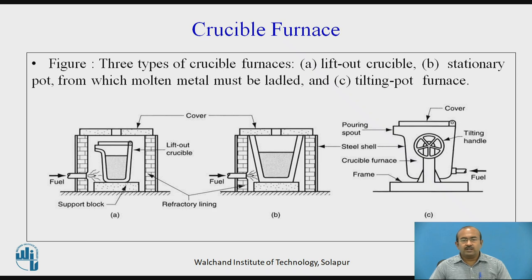The second type is a larger, stronger structure with more capacity — the stationary pot — in which the molten metal cannot be lifted out directly, but can be taken out by means of ladles. For simplicity of pouring, the tilting pot furnace was developed. Subfigure C shows how the tilting mechanism works with a tilting handle. The ladles can be filled by tilting the crucible furnace itself and taken over to the pouring station.